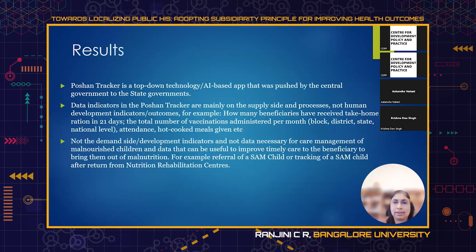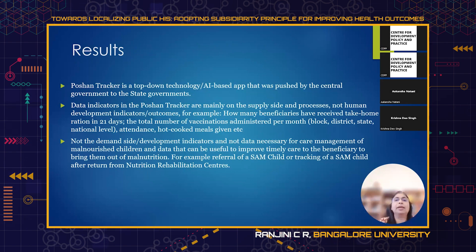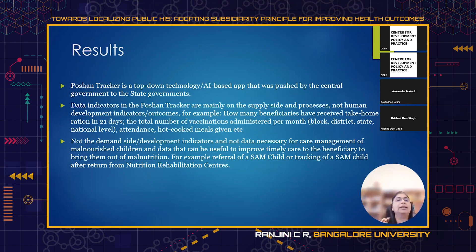Poshan Tracker is a top-down, AI-based app pushed by the central government to the state governments, although state governments already had their own apps and technologies. There were instructions to stop these existing systems and adopt Poshan Tracker. The data indicators in Poshan Tracker are mainly supply-side and process-oriented — for example, how many beneficiaries received take-home ration in the last 21 days, total vaccinations per month at block, district, and state levels, and attendance at hot cooked meal programs.